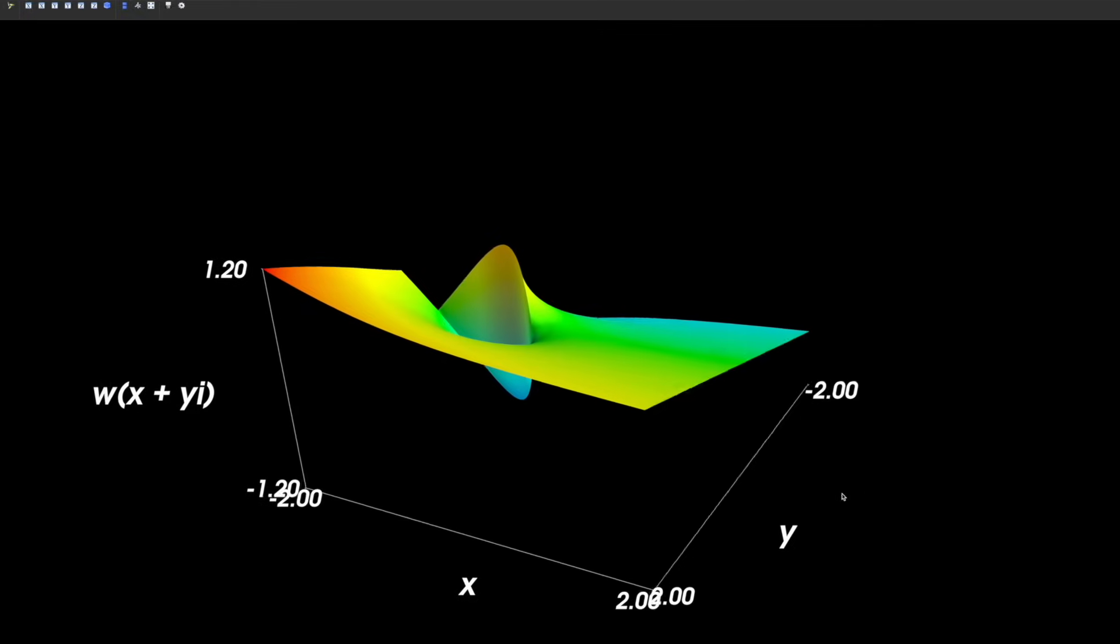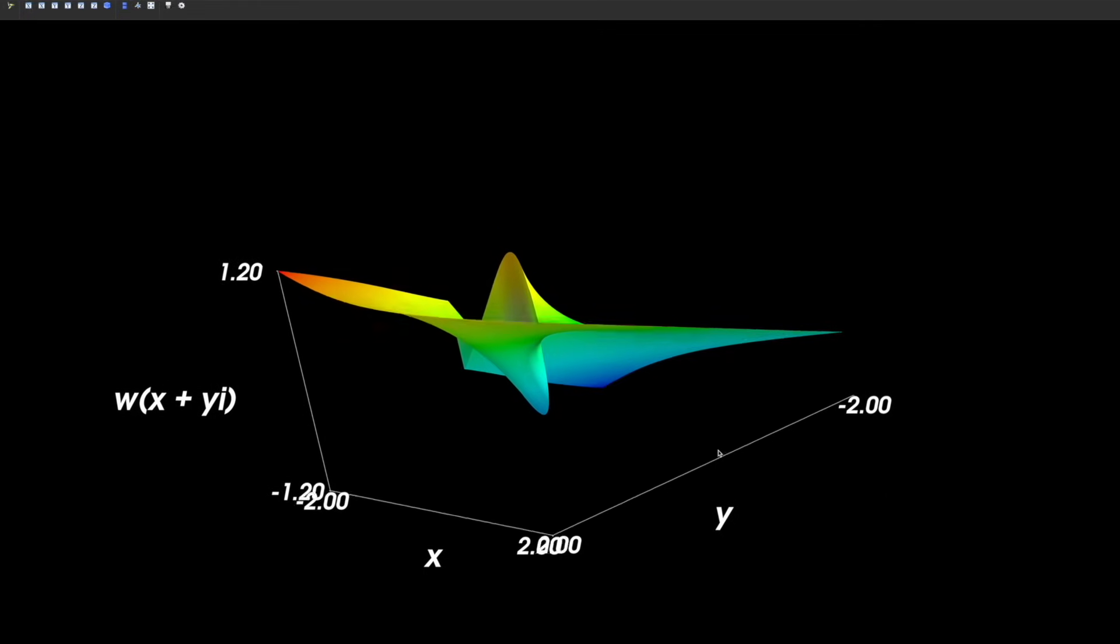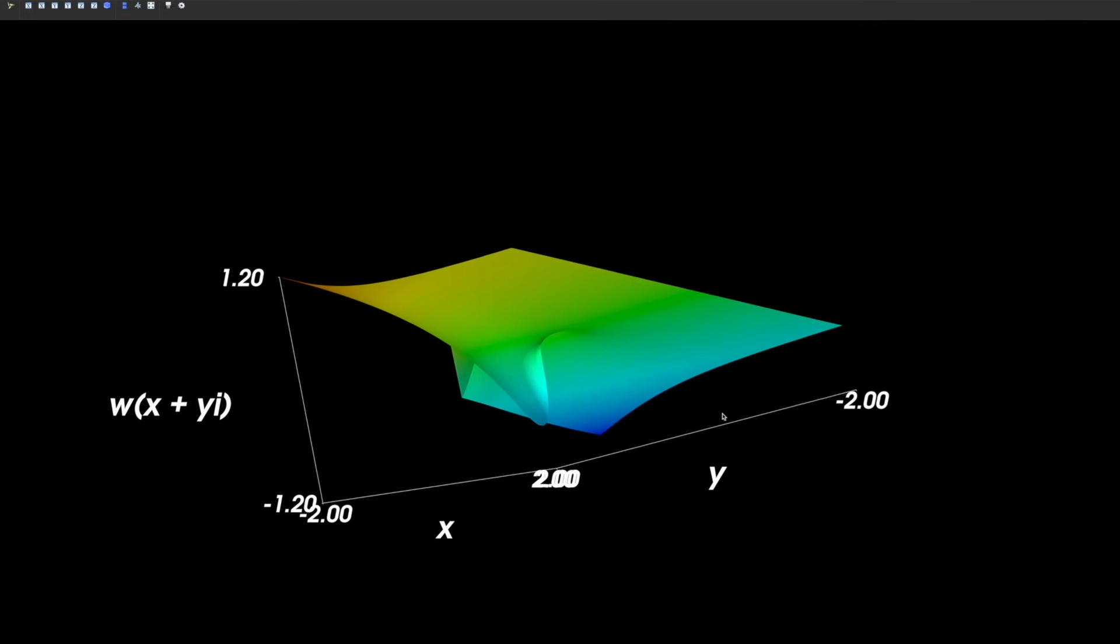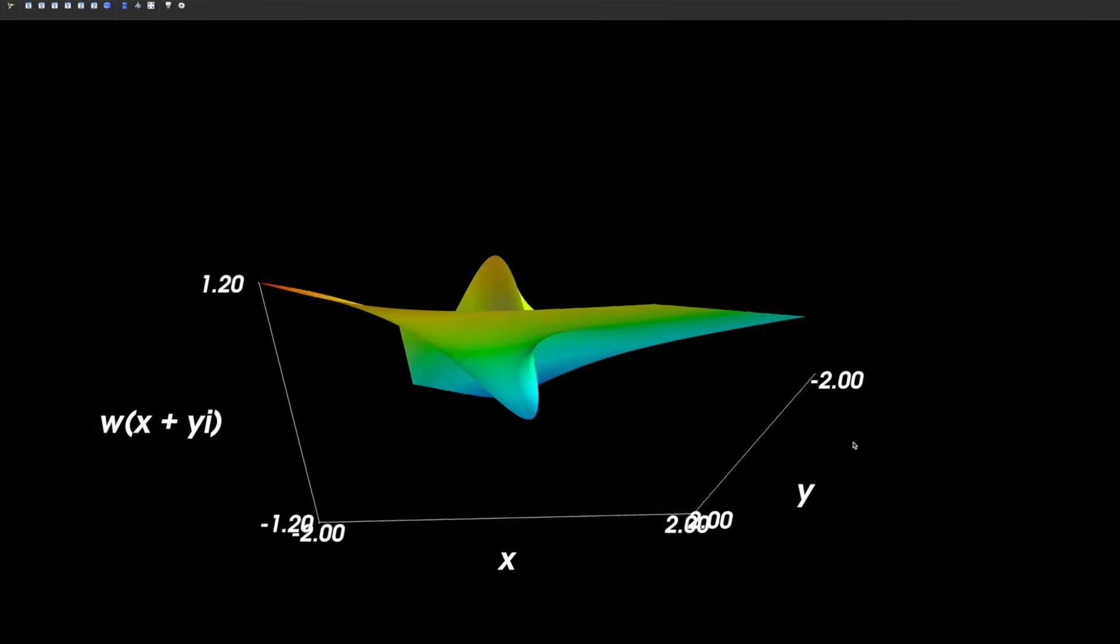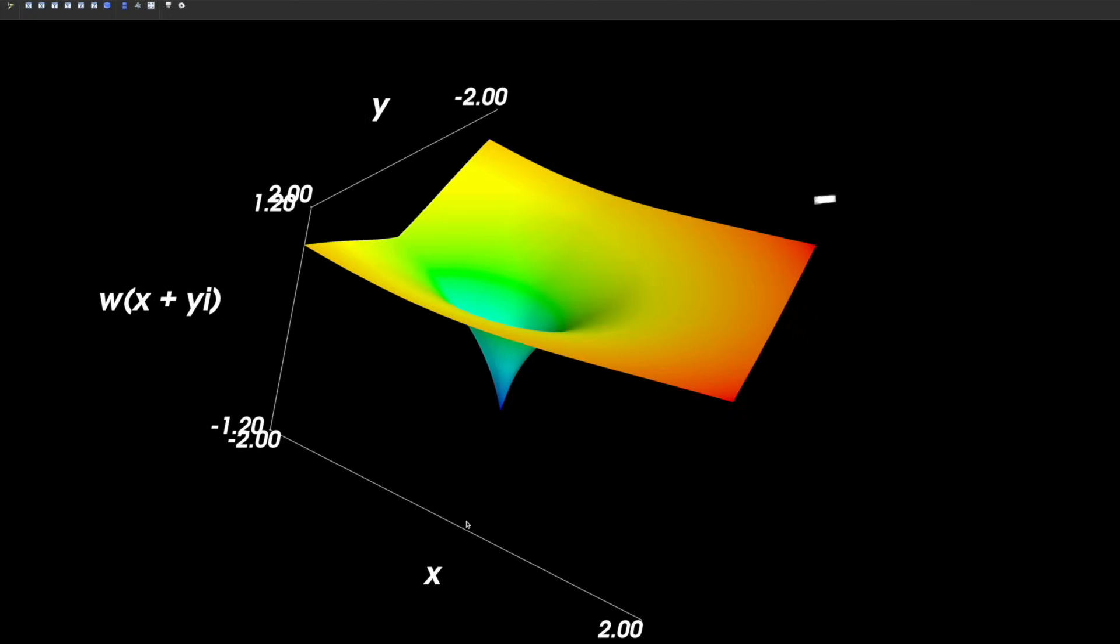If we instead plot the product of the real and imaginary parts of the Lambert W function, we can see the discontinuity even more clearly. And somewhere around here is our old friend the omega constant, a bit lost in the expanse, but nonetheless present.